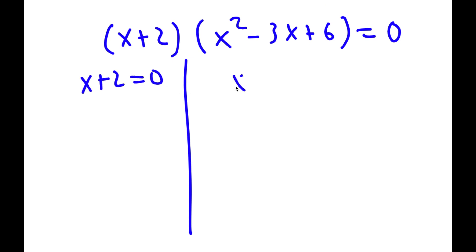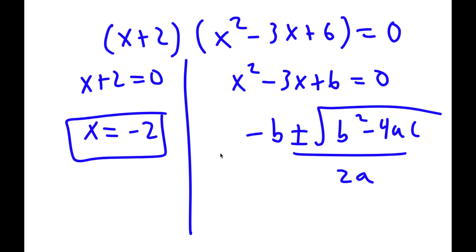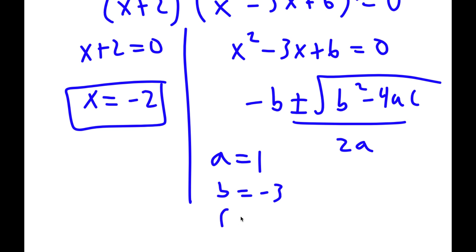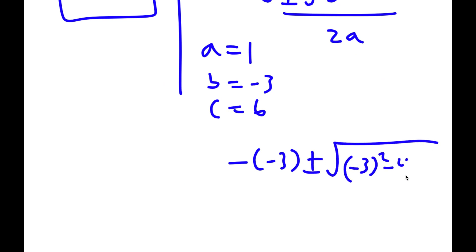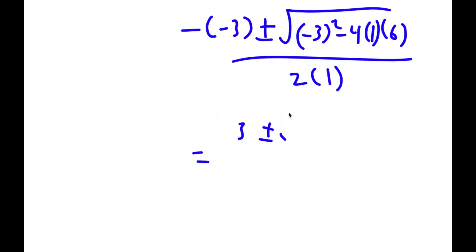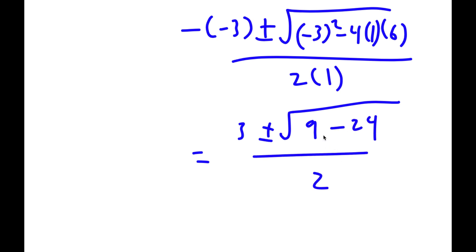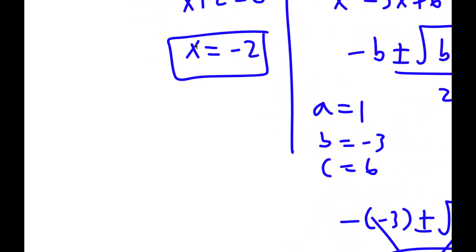This gives me two equations: x plus 2 equals 0, and x squared minus 3x plus 6 equals 0. For x plus 2 equals 0, x is obviously equal to negative 2 — that's one solution. For x squared minus 3x plus 6 equals 0, using the quadratic formula with a equals 1, b equals negative 3, and c equals 6, I get 3 plus or minus the square root of 9 minus 24 over 2. Since 9 minus 24 is negative 15, I have the square root of a negative number, which means there are no real solutions there. So my only solution is x equals negative 2.